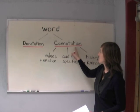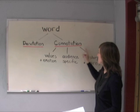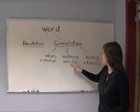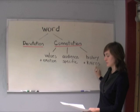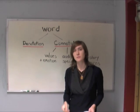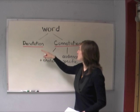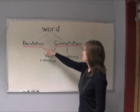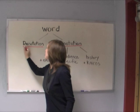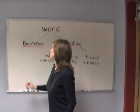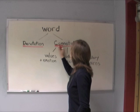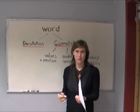To review, the connotation of a word includes all of these things — all the meanings associated with the word — which can be values and emotions, which can be specific to an audience, and which can include the word's own history and the kairos of the rhetorical situation. To help you tell the difference between denotation and connotation, here's a trick: denotation starts with D for definition, and connotation starts with 'con' for all the meanings that come with a word.